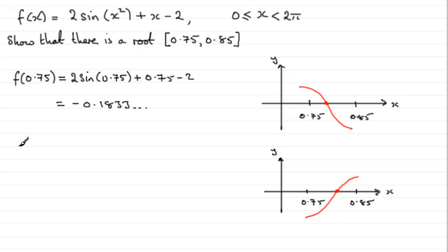So, if we were to put f of 0.85 into our equation, just like we did here, I'll leave you to write down all the bits for it, but you should find you get 0.1725, and so on.